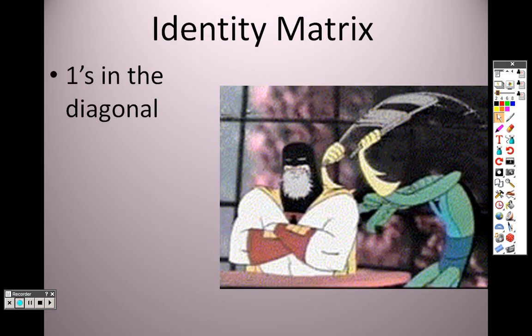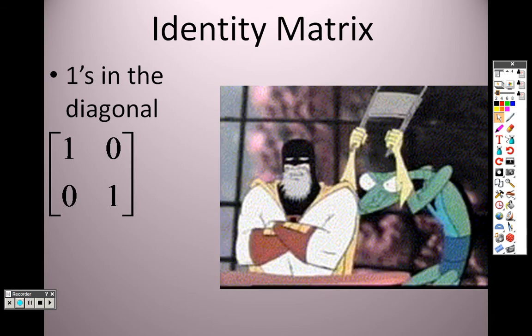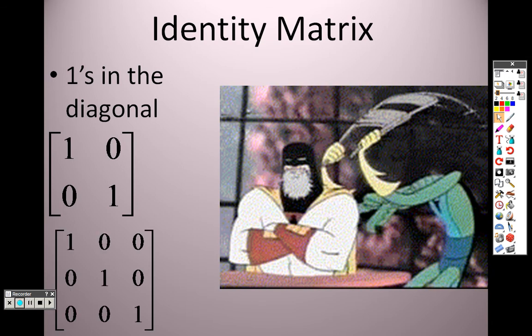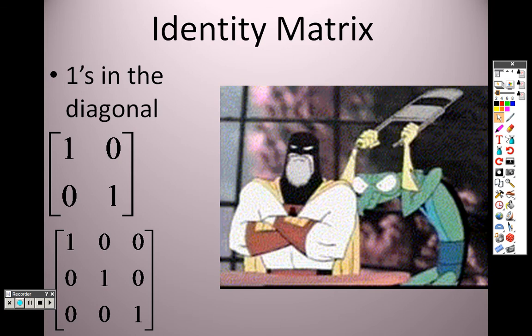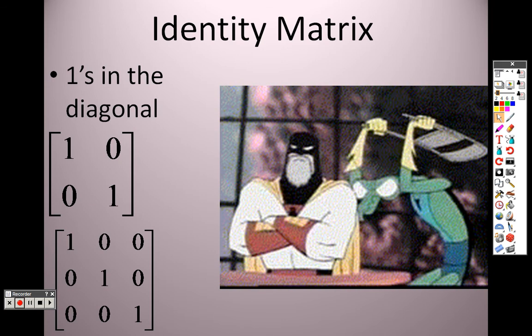Identity matrix, 1's in the diagonals, basically what it is, see how I have 1 and 1 down the diagonal there. And there's a 3 by 3, notice how it's 1 down the diagonal there.